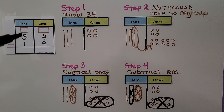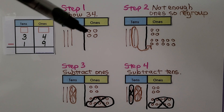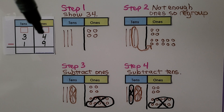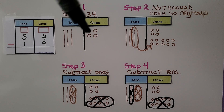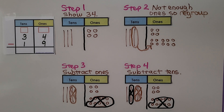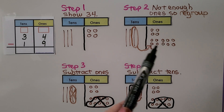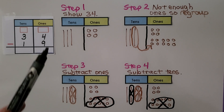Here we have 34 minus 19. Step one: we show 34 as three tens, four ones. We need to take nine ones away from four ones — there's not enough, so we regroup. We take one of these tens and turn it into ten ones. Now it's gone. Step three: subtract ones. We only have two tens left and we have fourteen ones. We take the nine ones away.